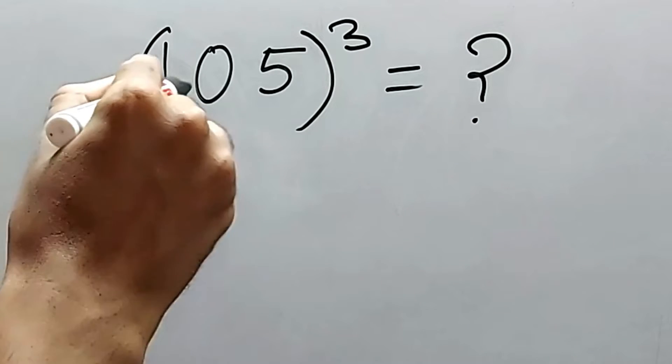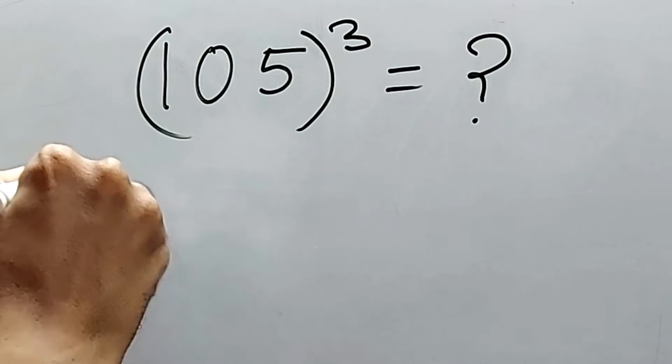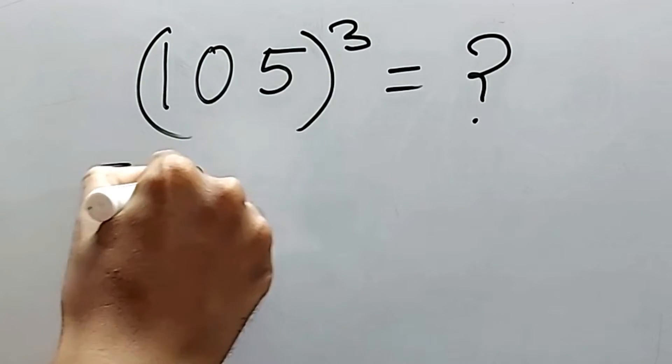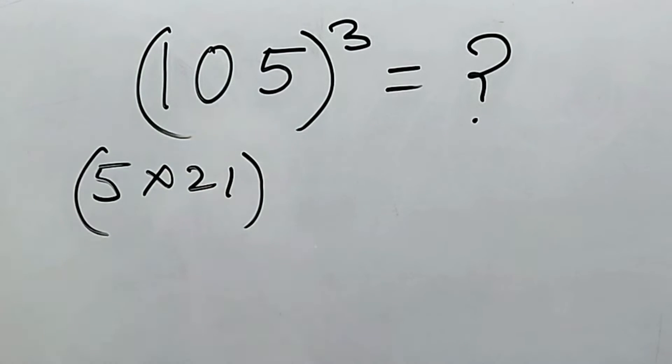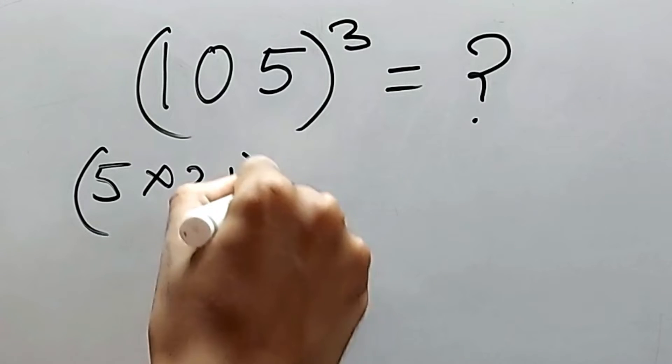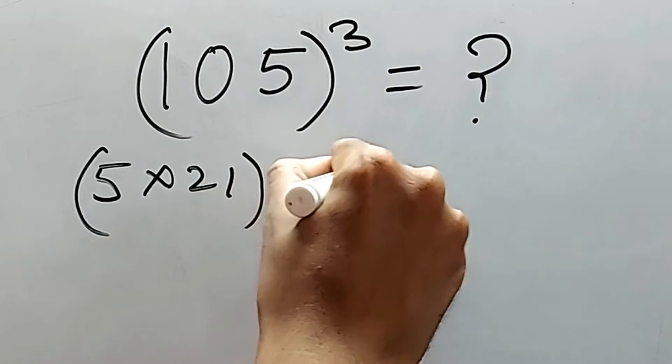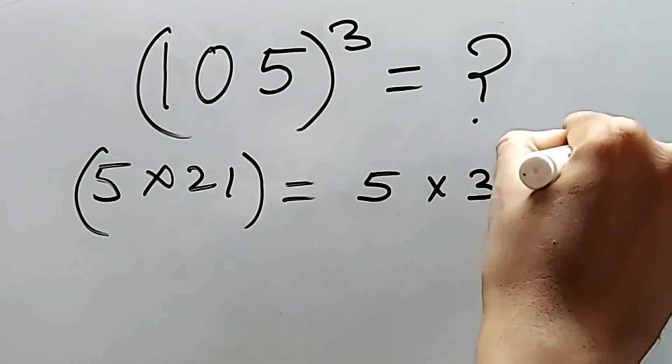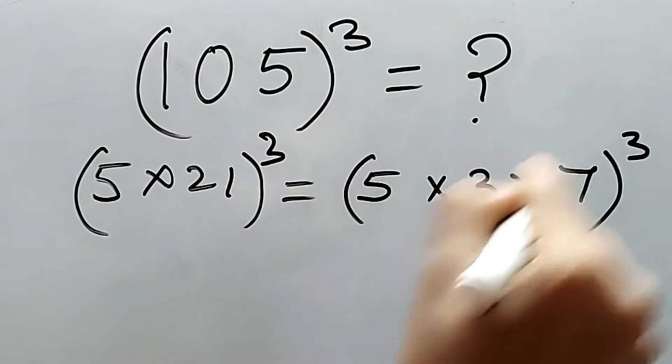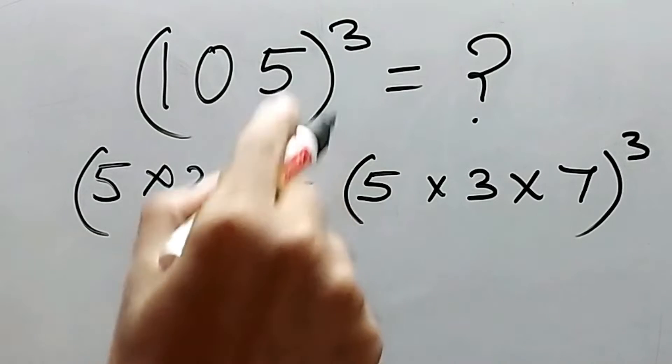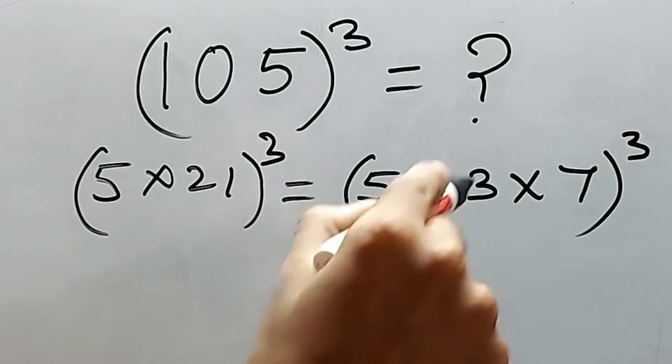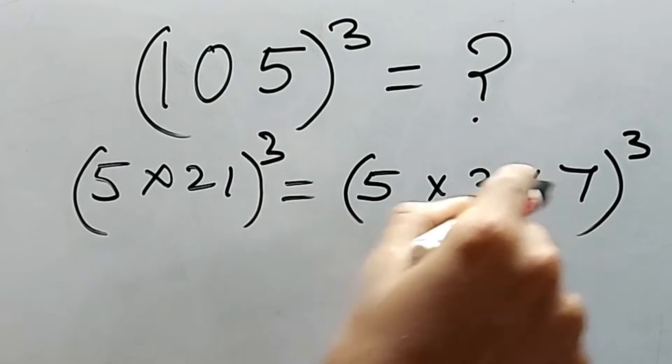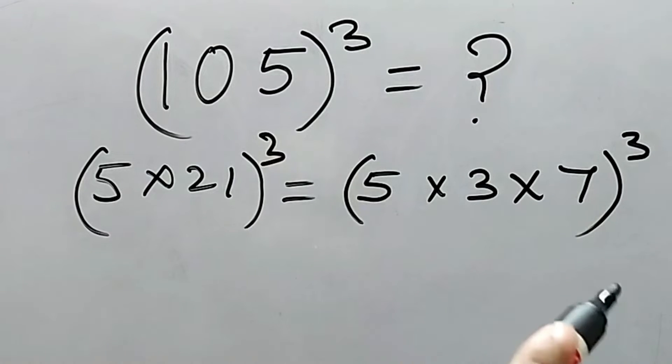Seeing this we may think that 105 means 5 into 21, right? And 5 into 21 means 5 into 3 into 7. Now we know the value of 5 cube is 125, 3 cube is 27, 7 cube is 343. Will it help us? No, because again we need to multiply all those things.